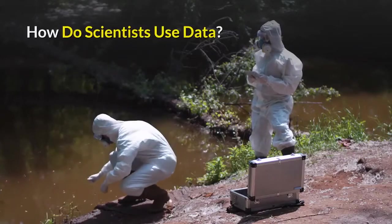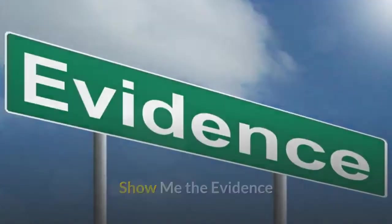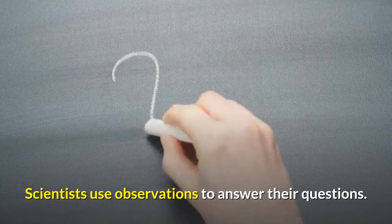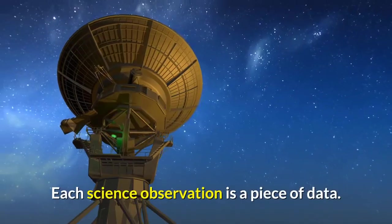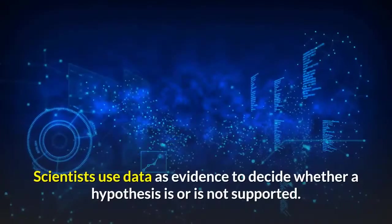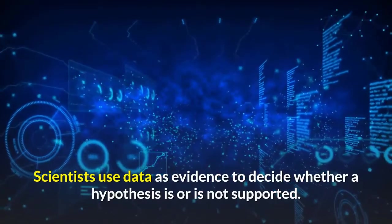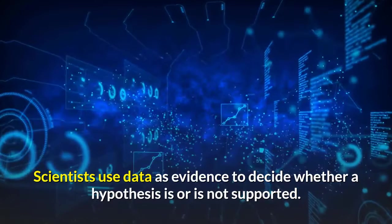How do scientists use data? Show me the evidence. Scientists use observations to answer their questions. Each science observation is a piece of data. Scientists use data as evidence to decide whether a hypothesis is or is not supported.